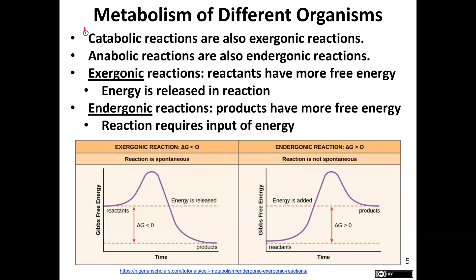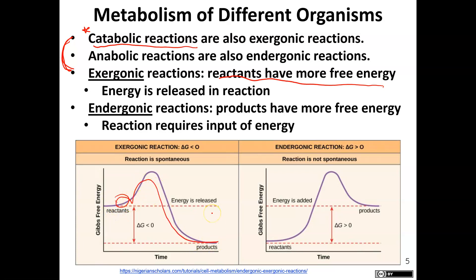A catabolic reaction is one in which we break something down and release energy, which makes it an exergonic reaction. Exergonic reactions have more free energy in the reactants, and that energy is released — you have a lot of free energy at the start, and it decreases as the reaction proceeds.